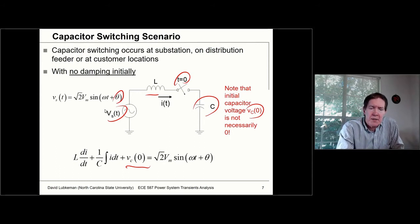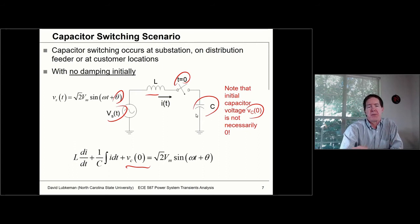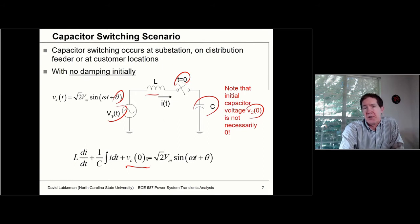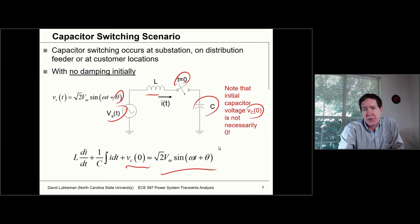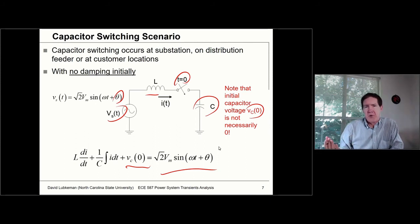If I write a loop equation for the circuit, I have the voltage across the inductance L·di/dt, plus the voltage across the capacitor — that's (1/C)·∫i dt plus the initial voltage — equal to the source voltage. This is my Kirchhoff voltage law equation for the circuit in terms of solving for the current.